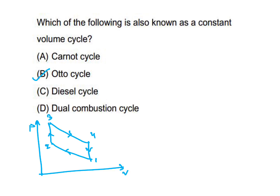In the Otto cycle, there is constant volume heat addition and constant volume heat rejection. Processes 1-2 and 3-4 are isentropic processes.